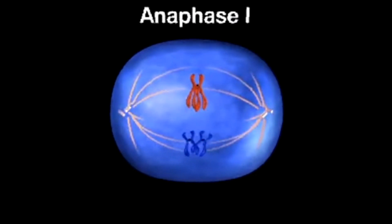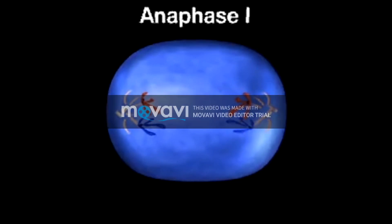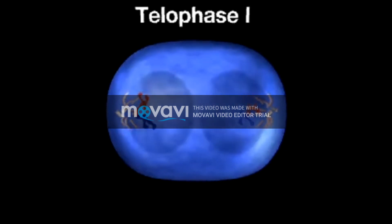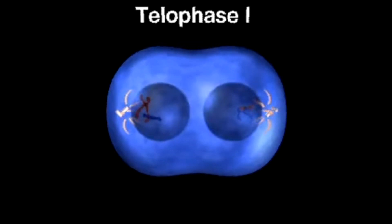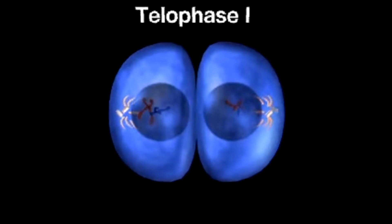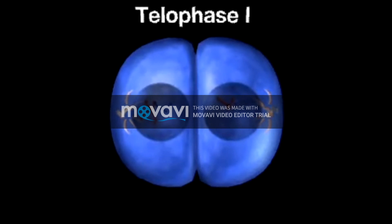During anaphase I, homologous chromosomes separate and move to opposite ends of the cell. This critical step ensures that each new cell will receive only one chromosome from each homologous pair. During telophase I, the spindle is broken down, the chromosomes uncoil, and the cytoplasm divides to yield two new cells, each with half the number of chromosomes.